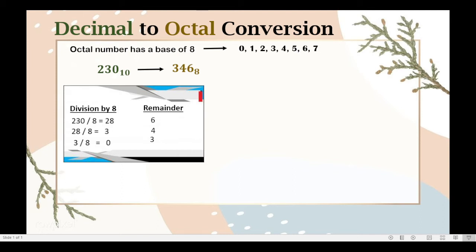We can also convert a decimal number into octal by converting first the decimal number into binary. And then, when we already have our binary equivalent of the given decimal number, we are going to get the octal equivalent of the converted binary number. So this is how we do it.